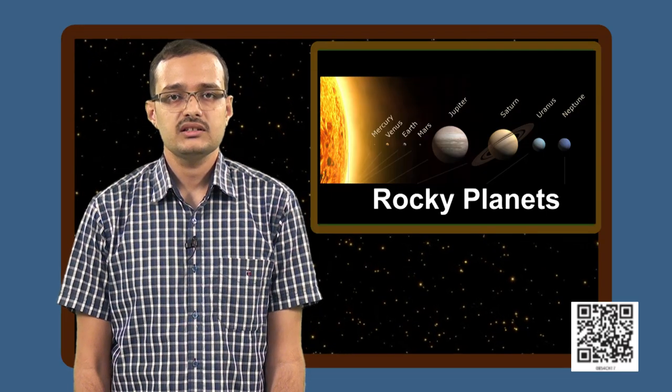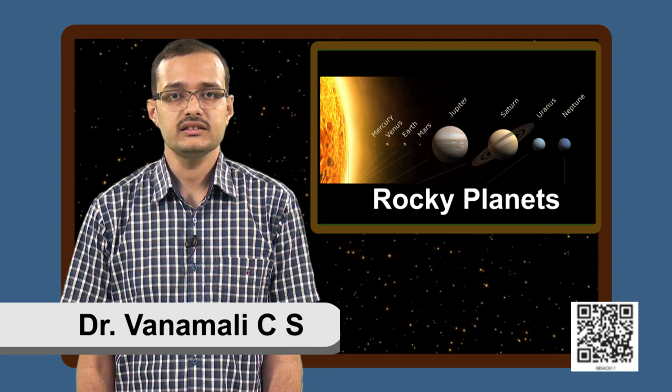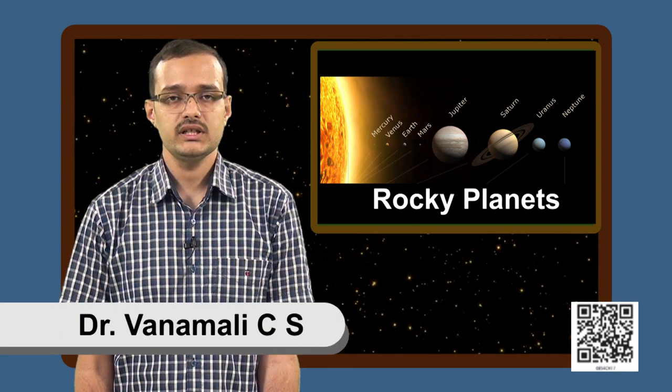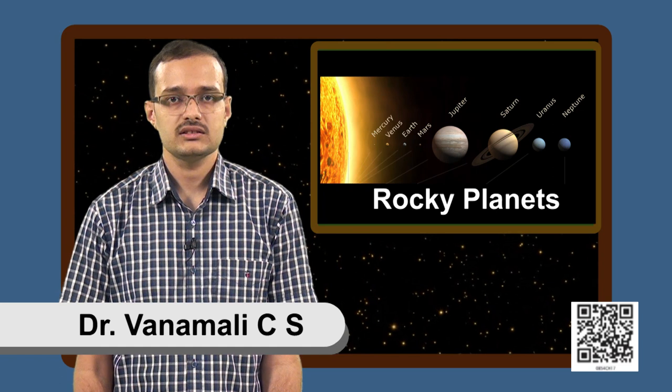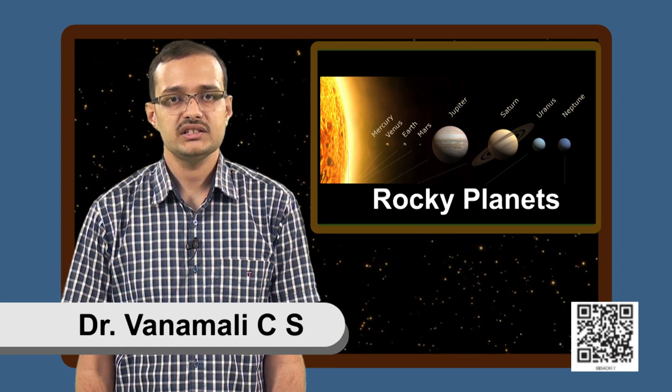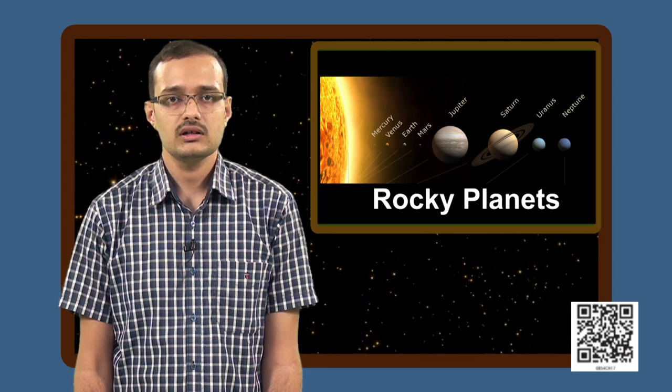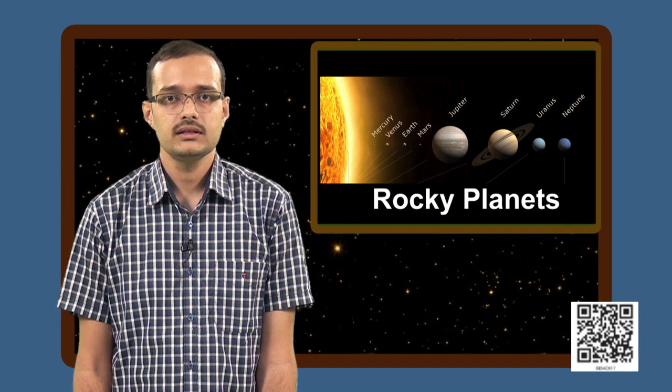So these are the four innermost planets in the solar system, namely Mercury, Venus, Earth and Mars. Because of their rocky nature, these planets are also called the rocky planets.